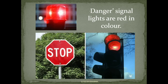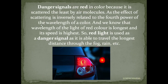Danger signals, stop lights in traffic, police lights, and road signs are all painted red. This is because red light is scattered the least by air molecules, as the effect of scattering is inversely related to the fourth power of the wavelength, and red has the longest wavelength. Thus red light can travel the longest distance through fog, rain, etc., making it ideal as a danger signal.